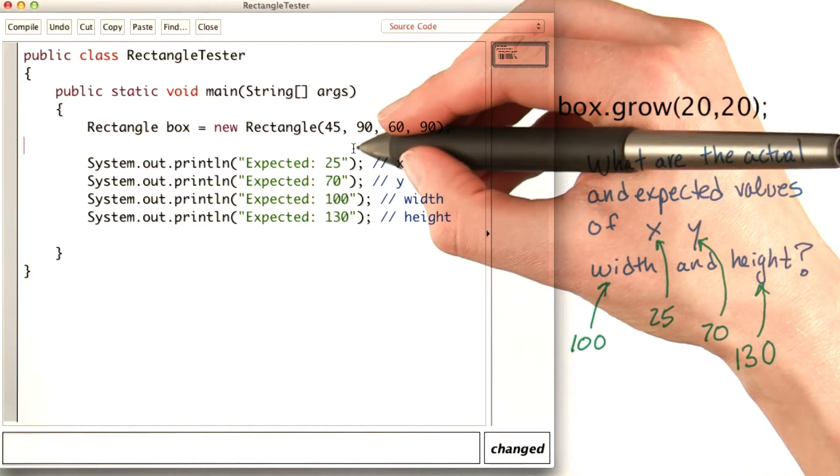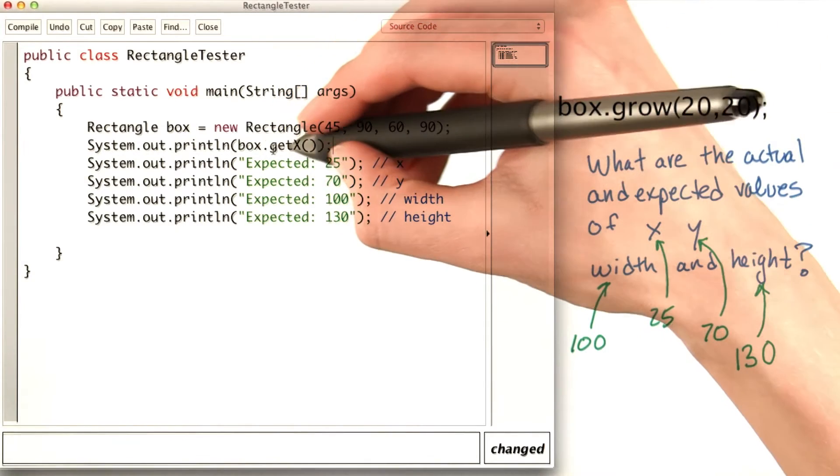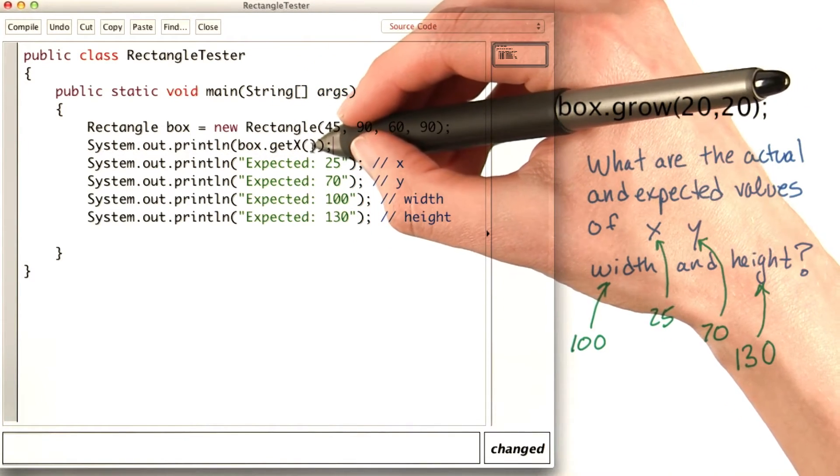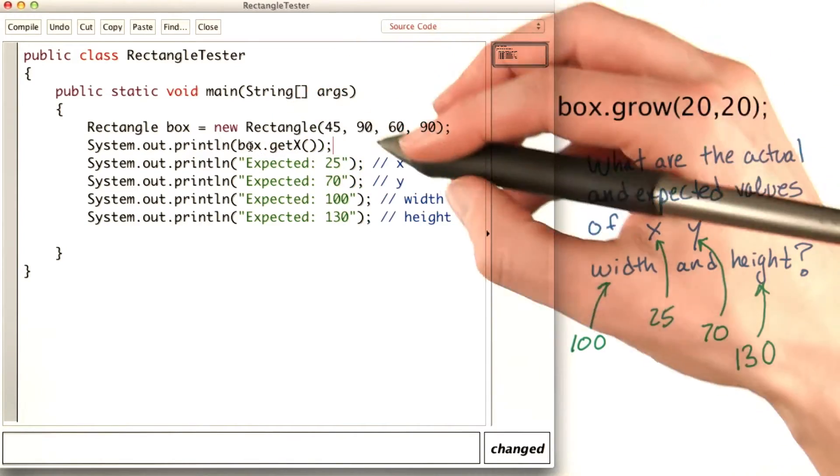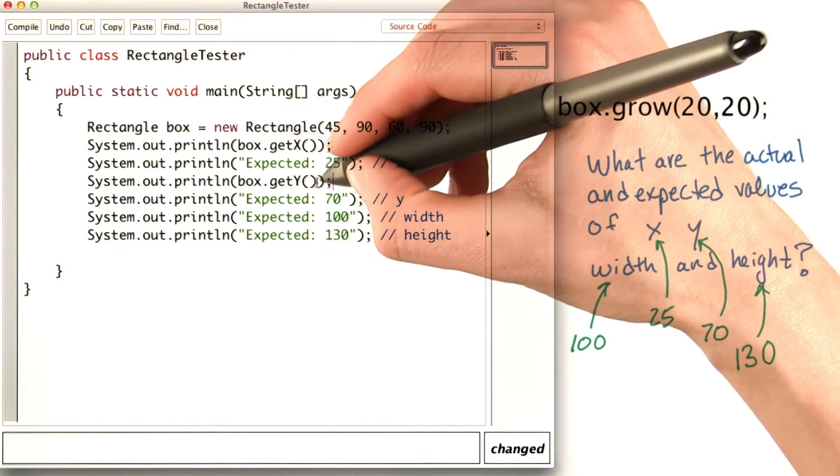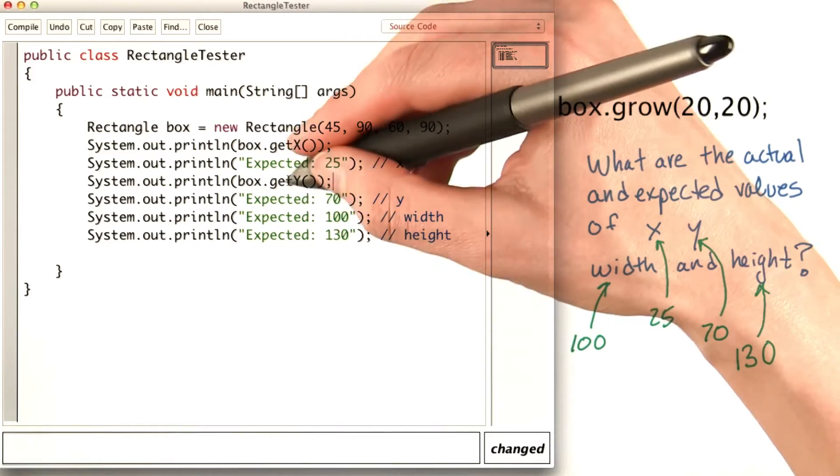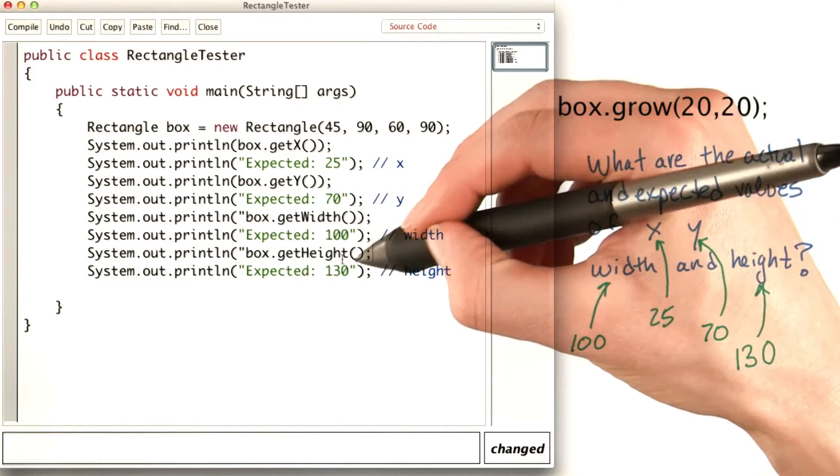I want to compare these to the actual values. Box.getx gets me the actual value of x for box. Box.gety gives me the actual value for y for the box. And I do the same thing for width and height.